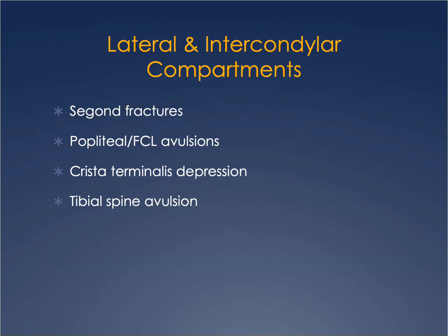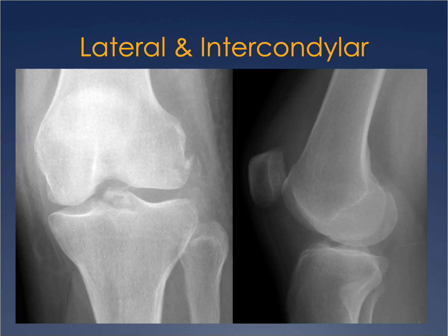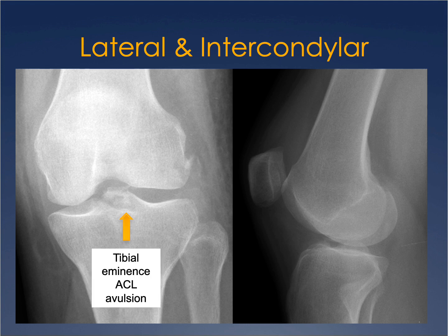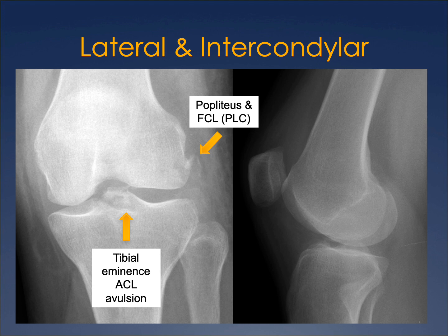Moving to the lateral and intercondylar compartments: here is a case with three very helpful findings. First, there is an osseous avulsion or irregularity of the tibial eminence in the midline, typically related to the ACL. Second, there are osseous flakes near the lateral femoral condyle — avulsions of the popliteus and fibular collateral ligament, representing posterolateral corner injury. Third, there is a subtle slender flake of bone near the lateral tibial plateau — a Segond fracture, which is an anterior capsular attachment of the anterolateral ligament, indicating anterolateral instability.